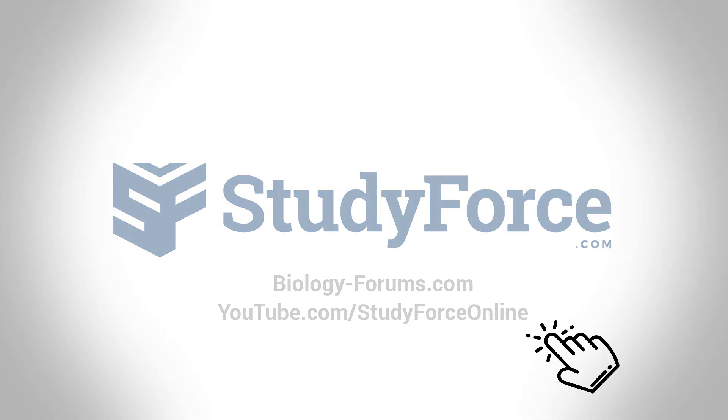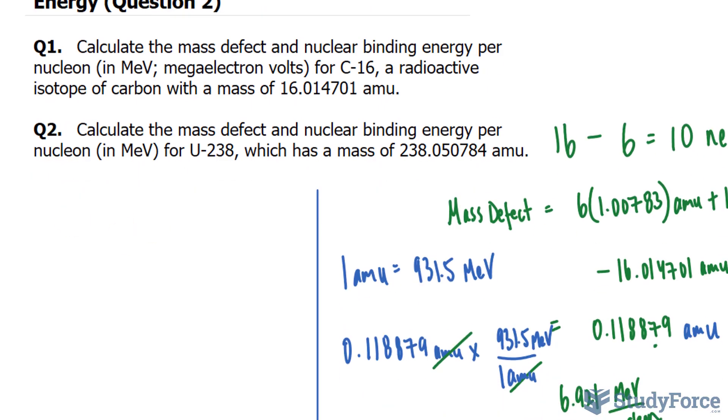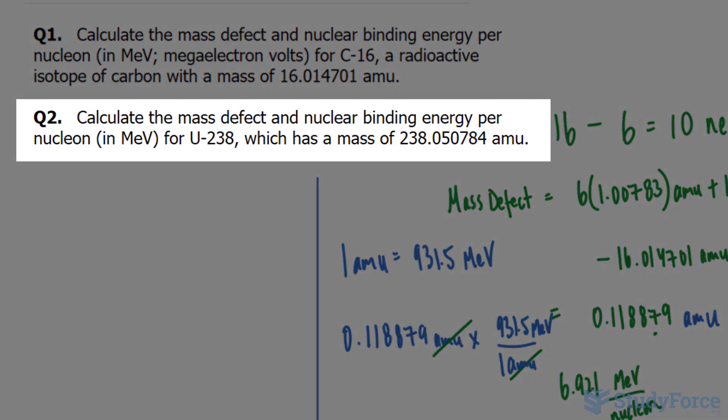Welcome back to part two of this series where you learn how to calculate mass defect and nuclear binding energy. We end it off with question number two, and the question reads: Calculate the mass defect and nuclear binding energy per nucleon in mega electron volts for uranium-238, which has a mass of 238.050784 AMU.